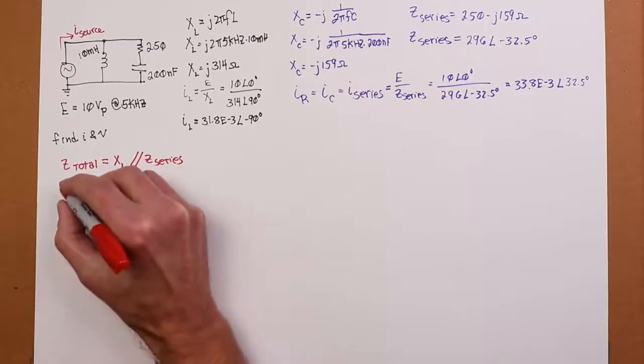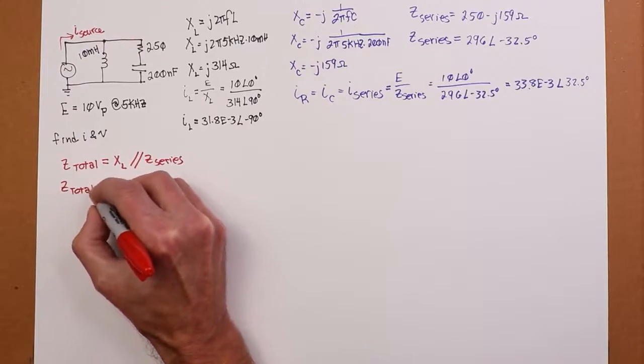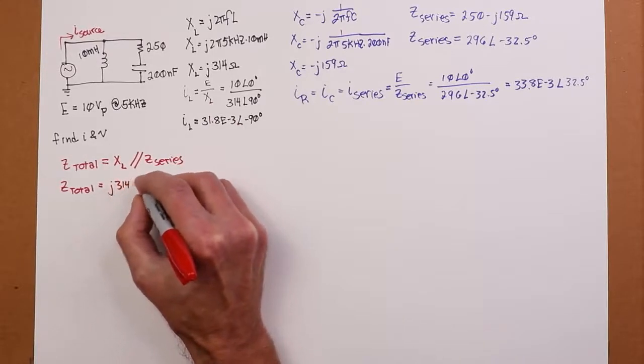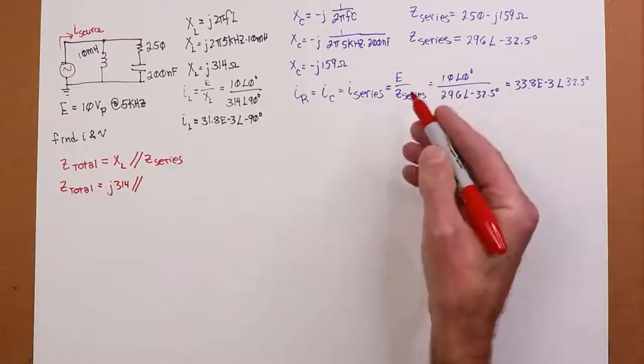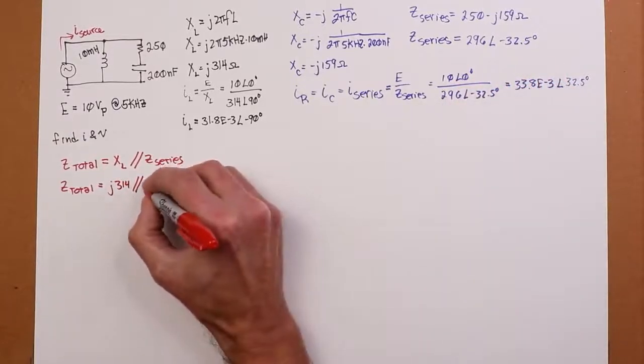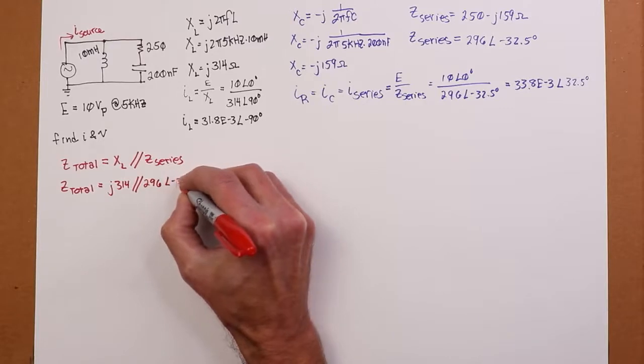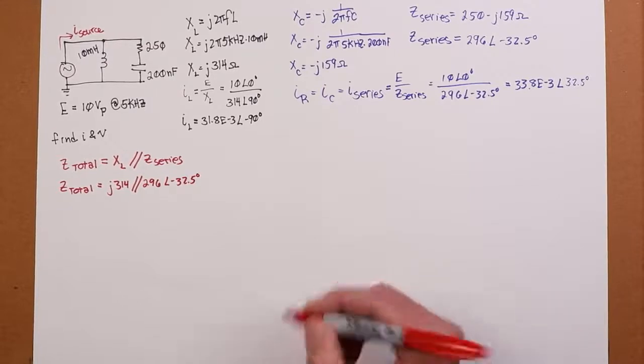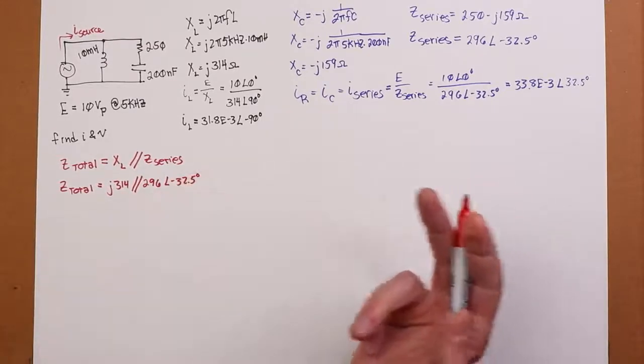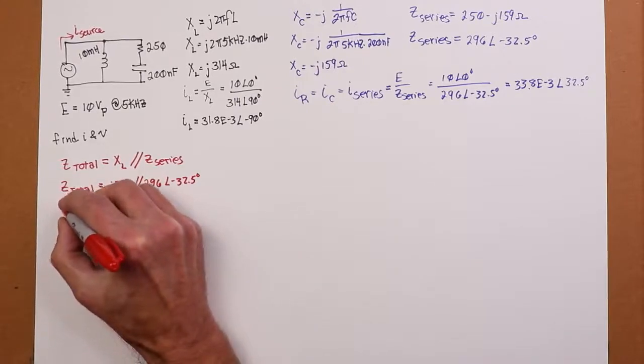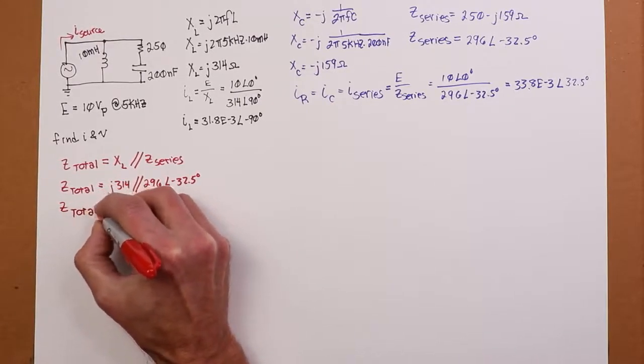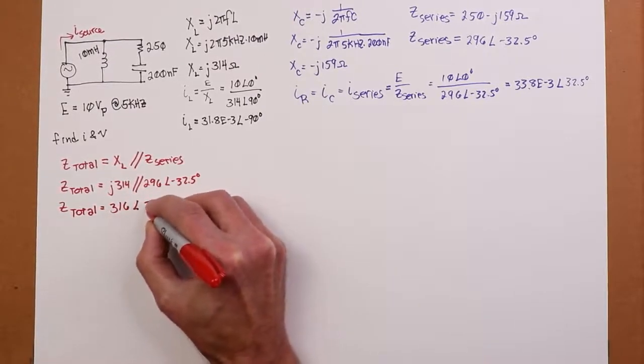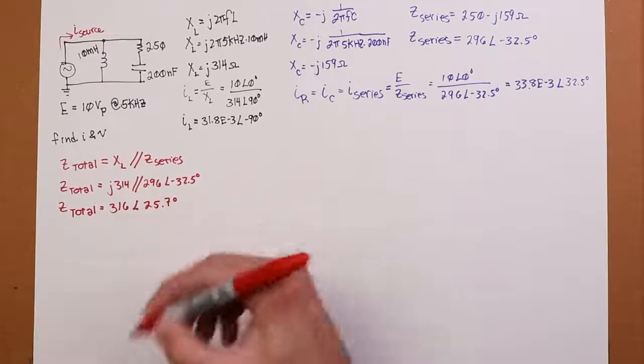So that's 10 at an angle of zero divided by 296 at an angle of minus 32.5 degrees. And that will work out to 33.8 mils at an angle of 32.5 degrees. So far so good.